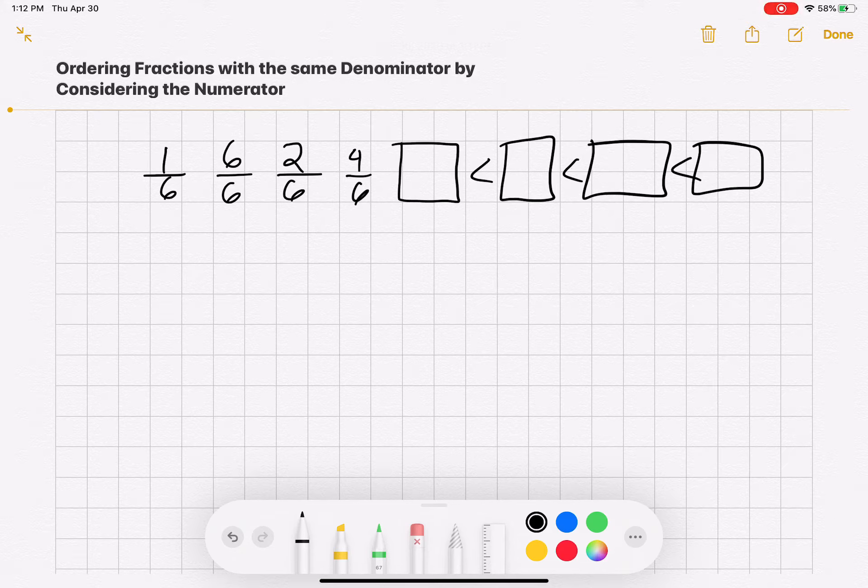Ordering fractions with the same denominator by considering the numerator. At this point, we should be able to look at our six here in the denominator and know that whatever object I'm looking at and comparing, they're all the same size and they all have six parts.